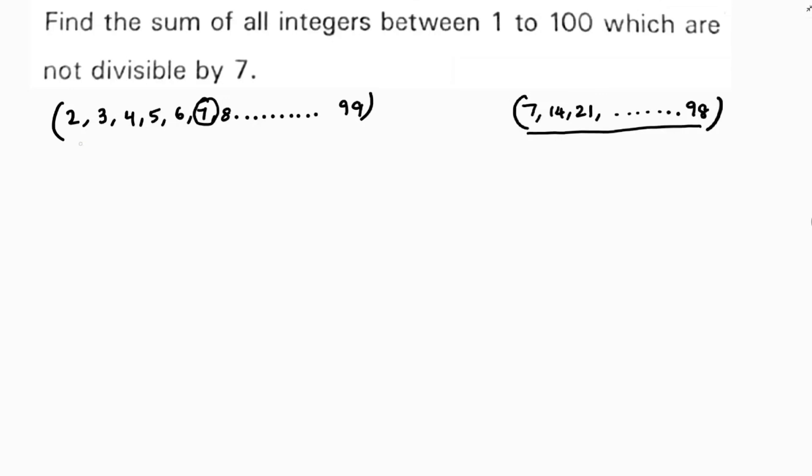So here, how many terms are there? See, 2 to 99. So from 2 to 99, there are 98 terms. N is how much? 98.